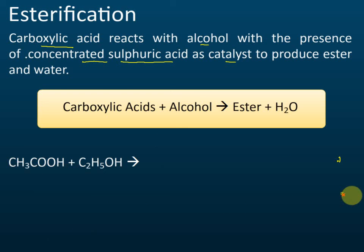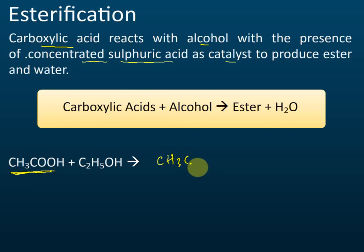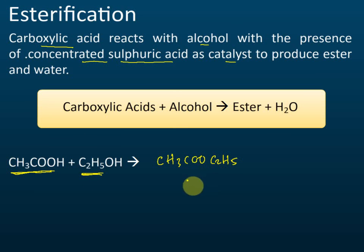From this we learn that when an alcohol reacts with carboxylic acid, the CH₃COO part from the acid combines with the C₂H₅ part from the alcohol to form the ester, while the H and OH form water.